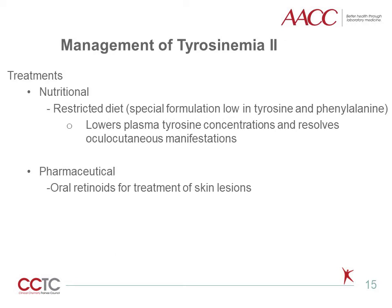Restricted diets low in tyrosine and phenylalanine have been instrumental in the management of tyrosinemia 2, with the concomitant lowering of plasma tyrosine concentrations leading to resolution of the oculocutaneous manifestations seen in these children. Oral retinoids can also be given to treat associated skin lesions.